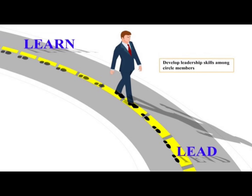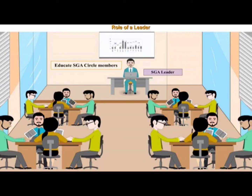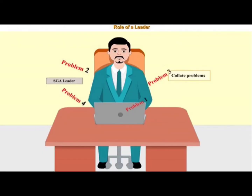The role of a leader is to educate SGA circle members. They conduct meetings at regular intervals to address various problems, collate those problems, and solve them with the help of circle members. They log Kaizen — a kind of improvement — in the quality management system, and make presentations on Kaizens to senior management of the department along with circle members.